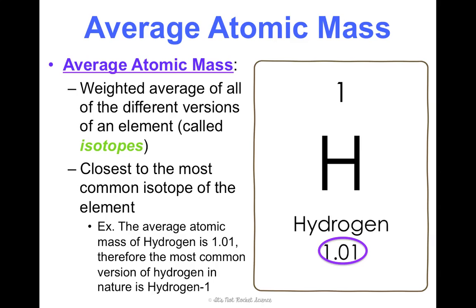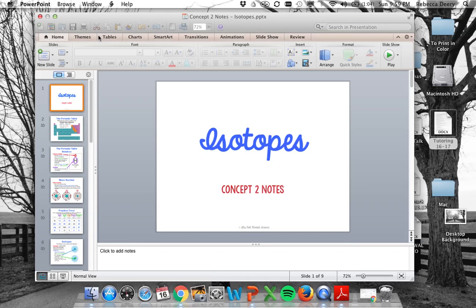So, that decimal, that average atomic mass is helpful. If I ever ask what's the most common version of an element, you can look at which isotope is the most common. You can look it up on the periodic table using that average atomic mass. All right. Now, we're going to practice.